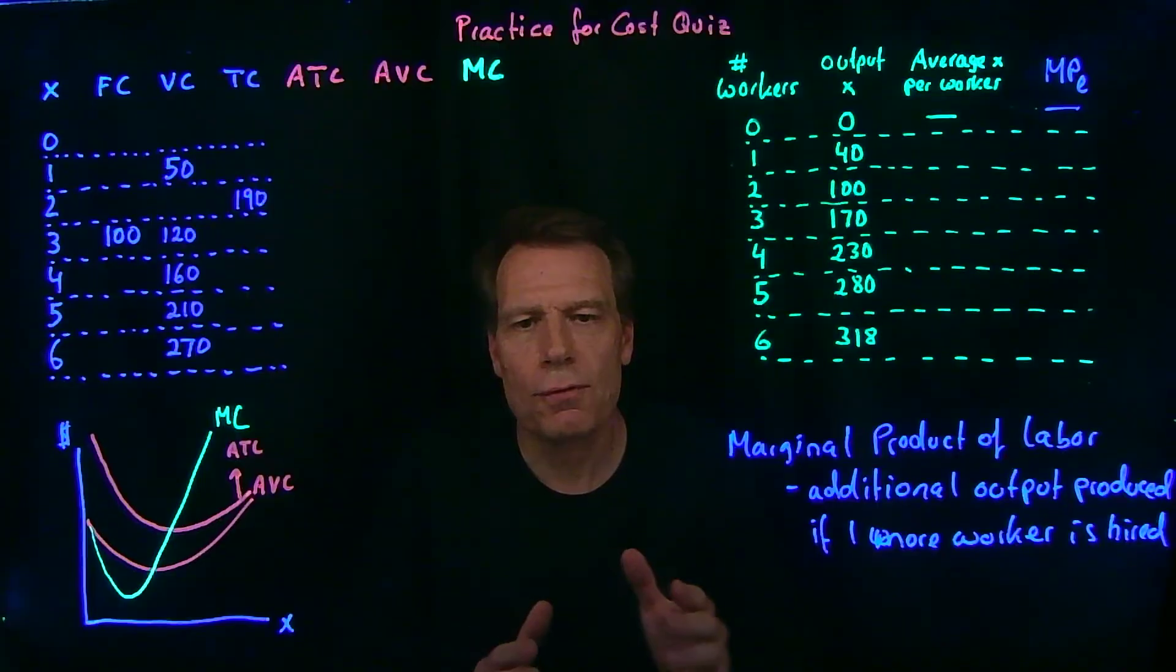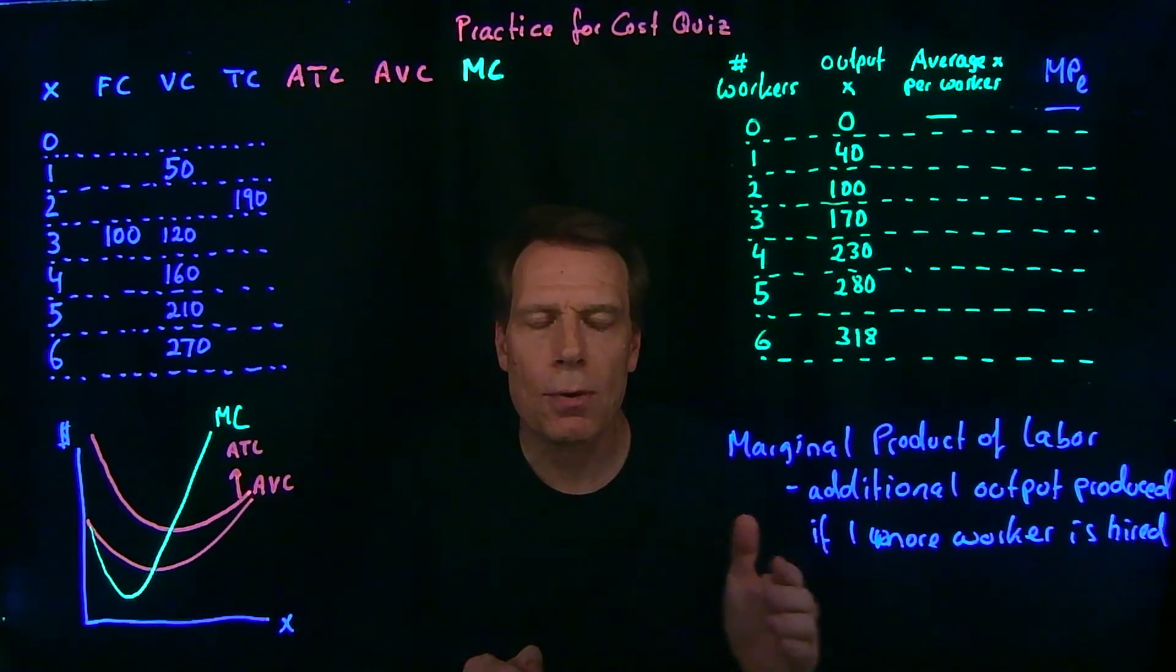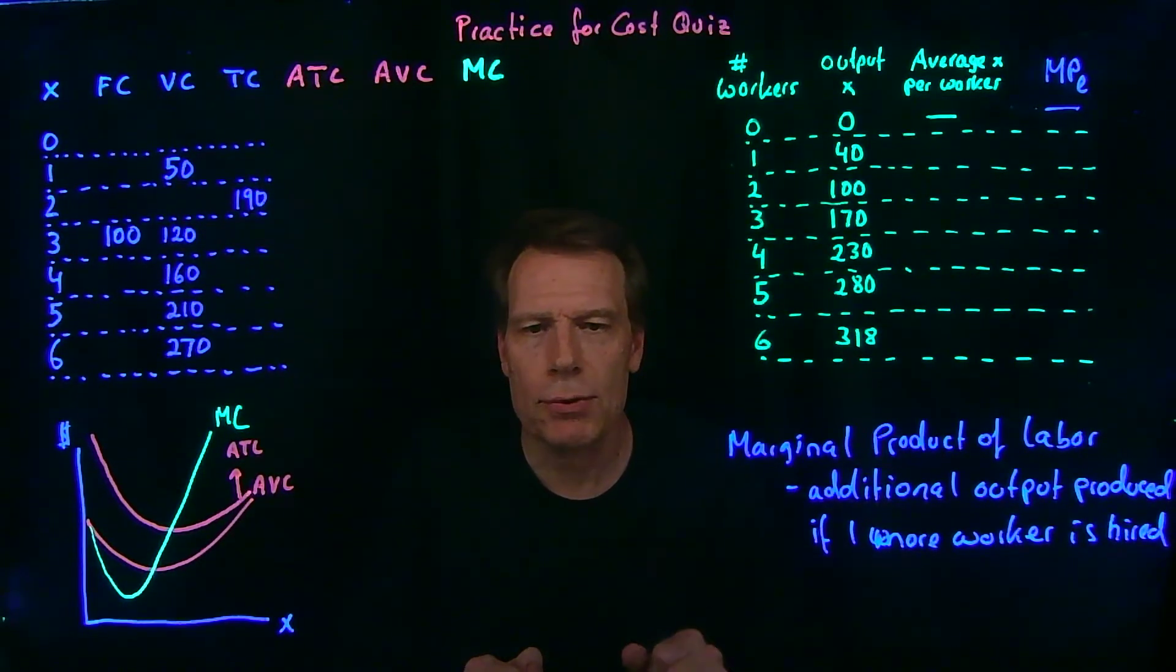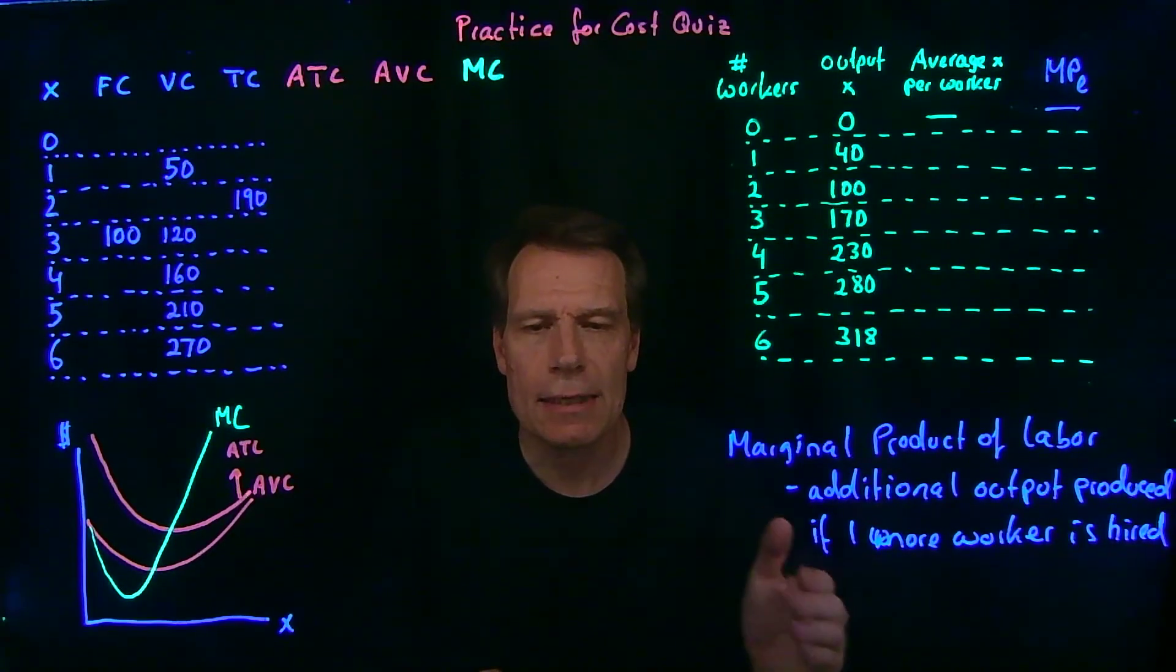And the only way for an average to fall is for the marginal quantity to lie below the average. The only way for your course grade to fall is if the next exam grade is below the current average.